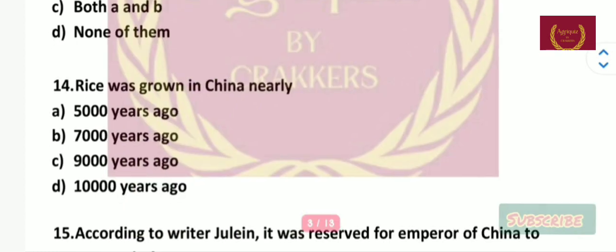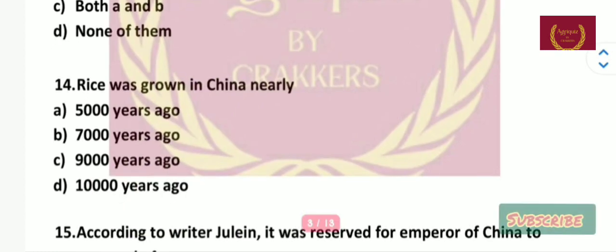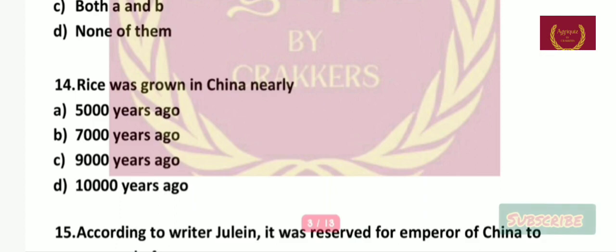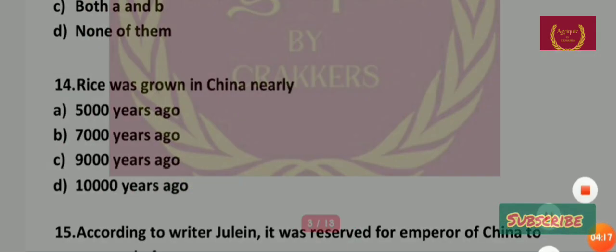Question 14: Rice was grown in China nearly — 5000 years ago, 7000 years ago, 9000 years ago, or 10,000 years ago? The right answer is 5000 years ago.